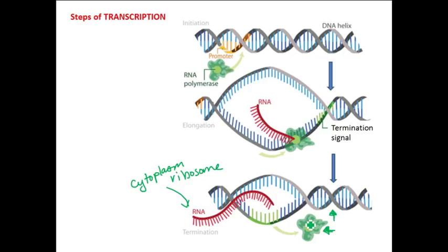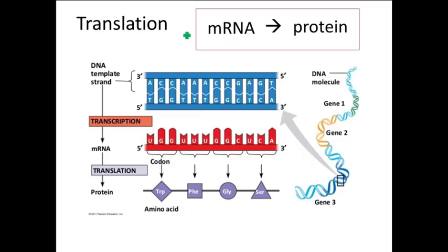Next is translation — the second step of protein synthesis or gene expression. This is when we go from the mRNA to the protein. We just made our mRNA during transcription, and now during translation we're going to take that mRNA and use it to make a protein — amino acids linked together by peptide bonds. That's the primary structure.